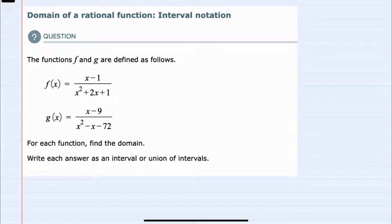In this video I'll be helping you with the ALEKS problem type called Domain of a Rational Function, Interval Notation. We're given two functions, f and g, and we're asked to find the domain of each and to write our answer as an interval or a union of intervals.